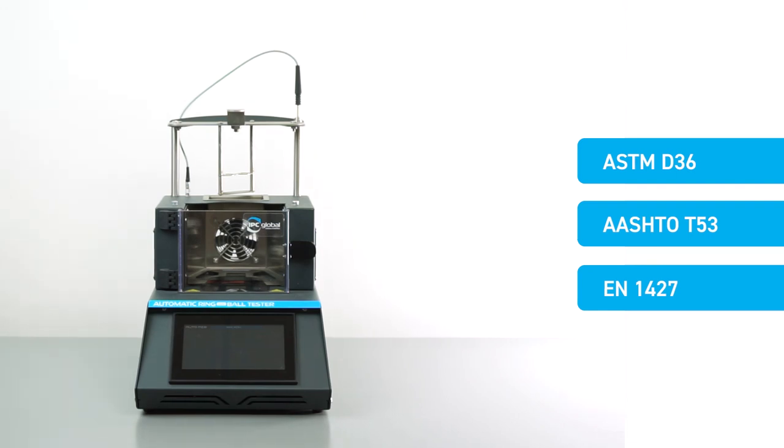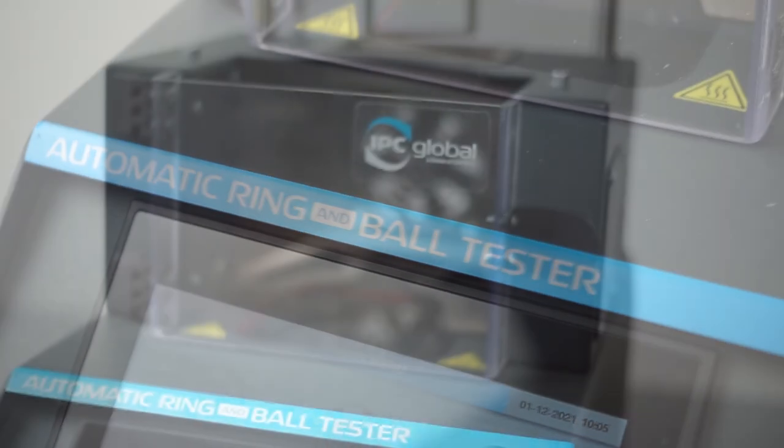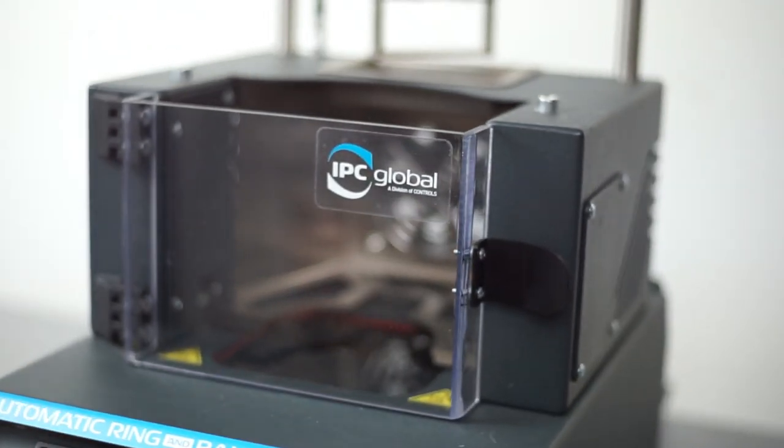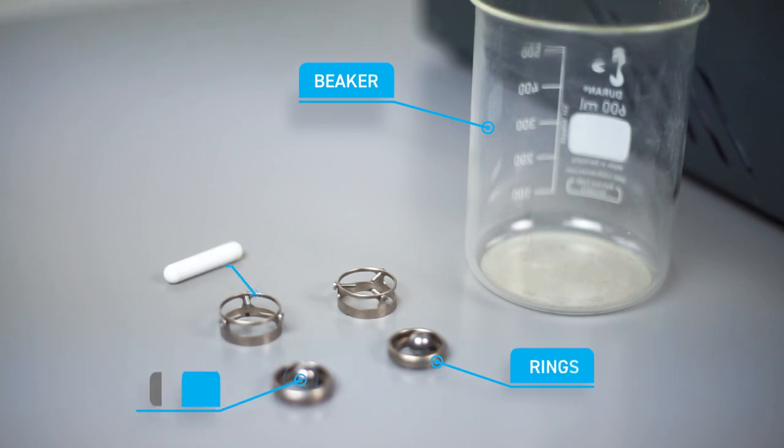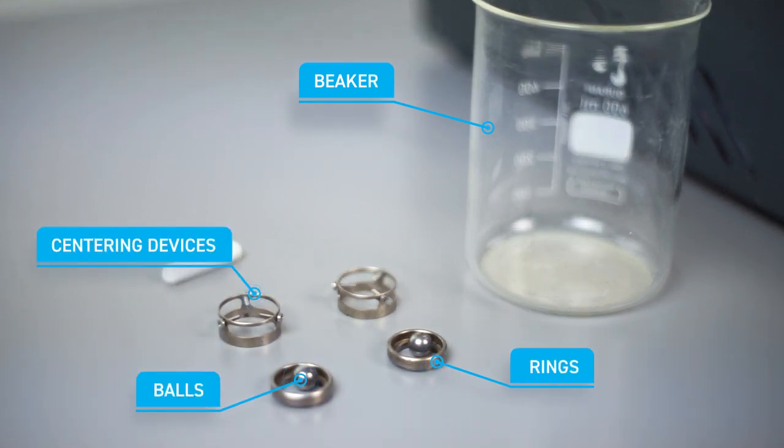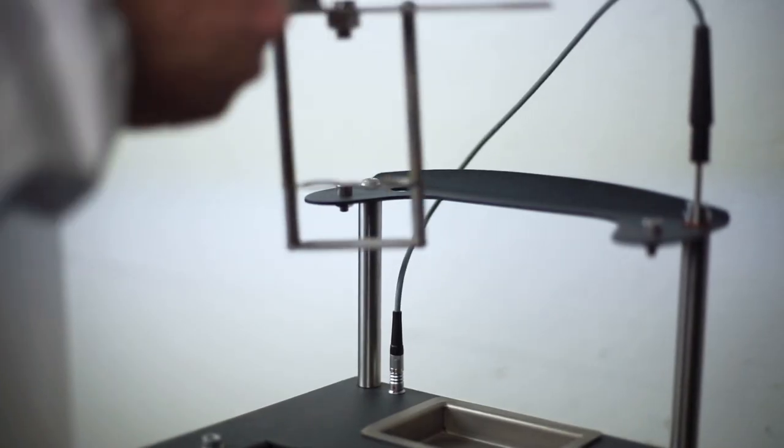IPC Global's automatic ring and ball apparatus is delivered complete with all the accessories needed to perform the softening point test. This includes a beaker, rings, balls and centering devices, plus a sample holder that can be positioned in the top support.